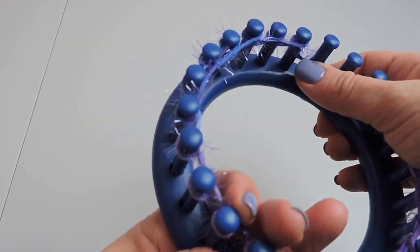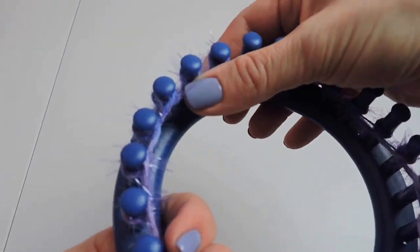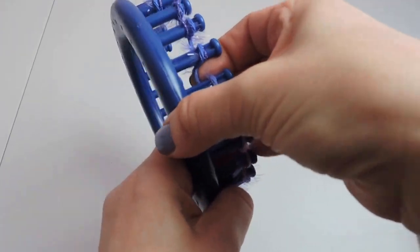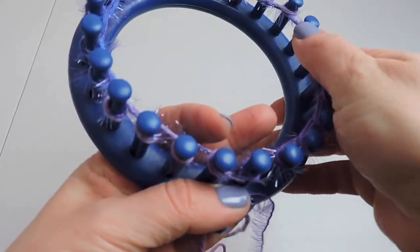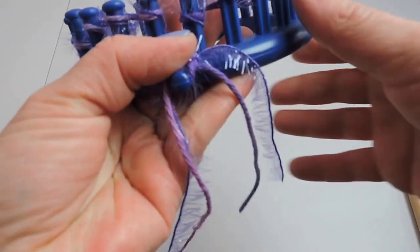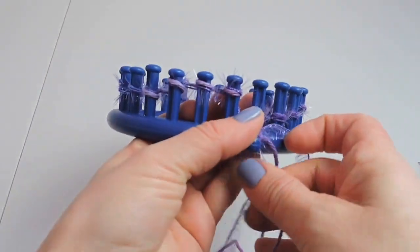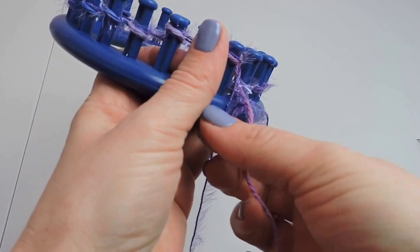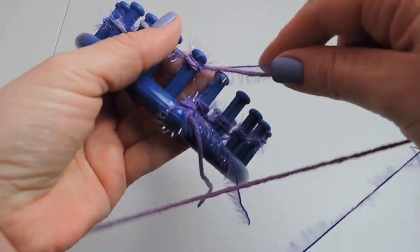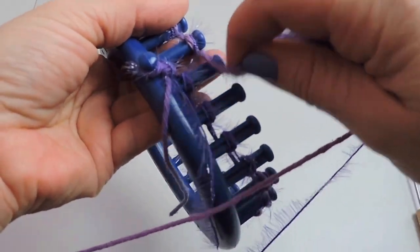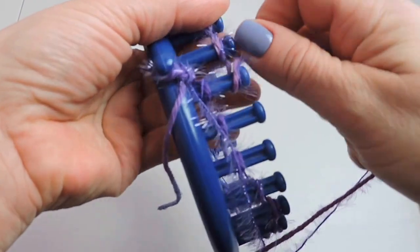So we're gonna push our yarn down, because now we're going to do another row of the E-wrap. So we want to make sure that first row is down, because after we do the second row, we're going to knit over. So here we go, starting the second row cast-on.